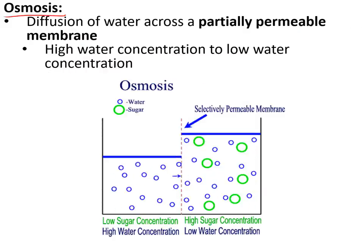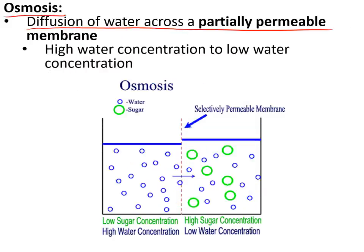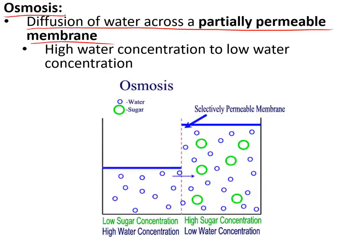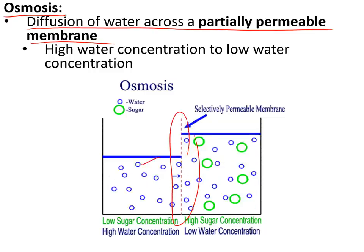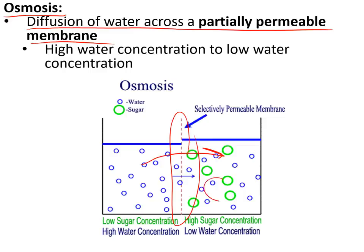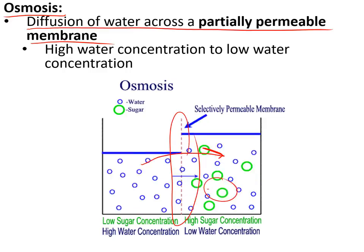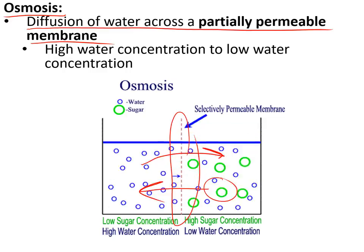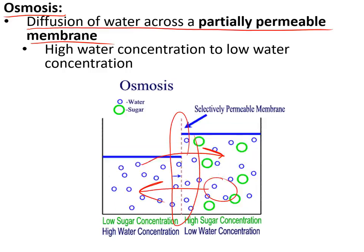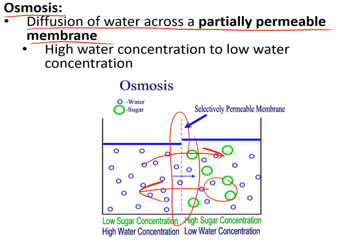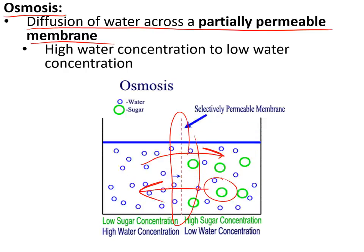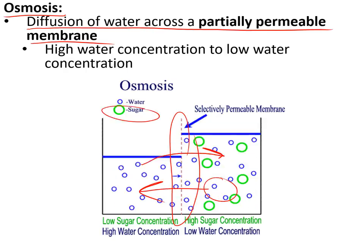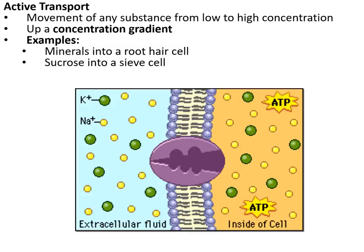Osmosis is how water enters and leaves cells. It is the diffusion of water across a partially permeable membrane — a membrane with small holes that allow water to pass through but are too small for dissolved substances like sugar. Water diffuses from high concentration to low concentration down a concentration gradient. The concentration of water is higher wherever the concentration of solute is lower.